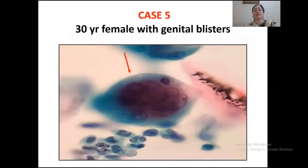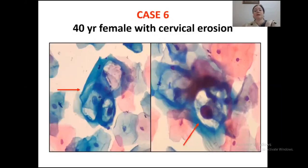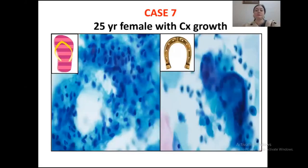Case five was a 30-year-old female with genital blisters. Case six was a 40-year-old female with cervical erosion. Case seven was a 25-year-old female with cervical growth. Both the pictures and the insets are again a clue to the diagnosis.